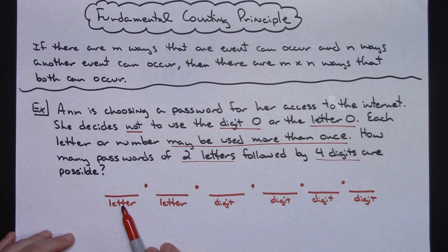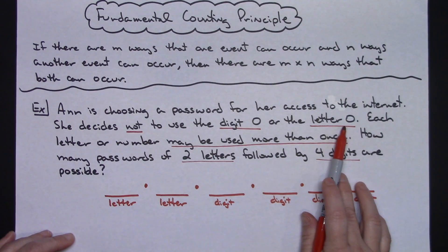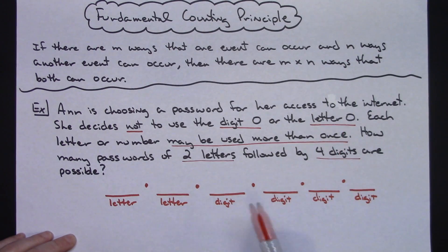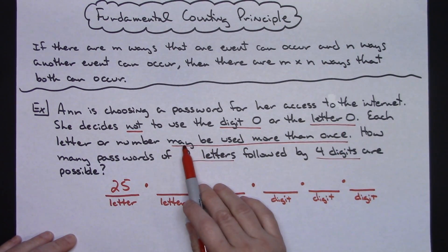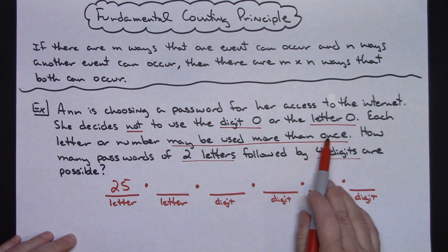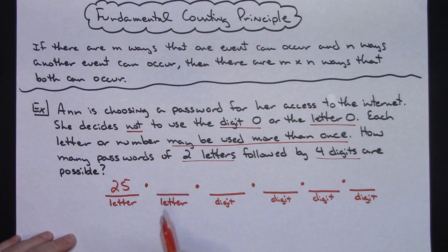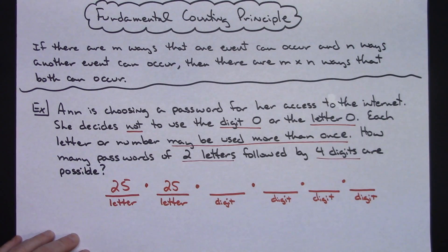In general, there are 26 letters in the alphabet, but she is going to omit the O. So that means there are really only 25 possible letters she can choose for her first letter. Now, because letters can be used more than once, when she picks her second letter she's still choosing from that original set of 25 letters. So she's got 25 letters to choose from there as well.